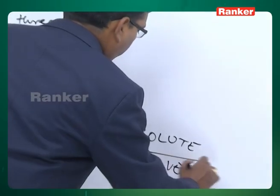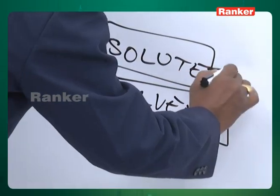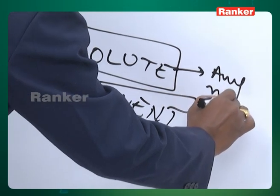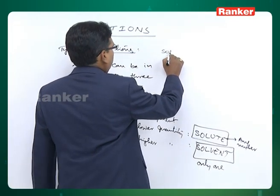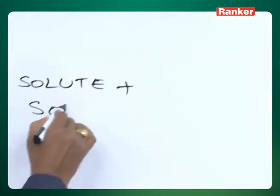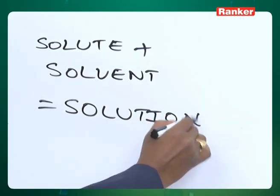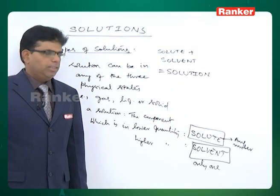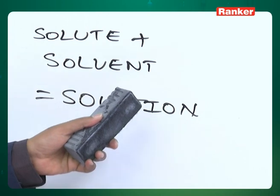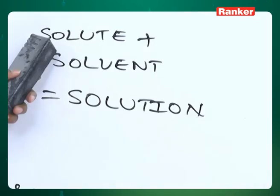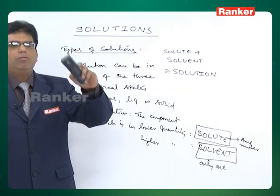For a solution, the solvent is always only one component, but the solute can be any number of components. So: solute plus solvent equals solution. In the types of solutions, we consider what the solutes and solvents can be with respect to physical states — solute in what phase, solvent in what phase, and finally what phase the solution will be in.